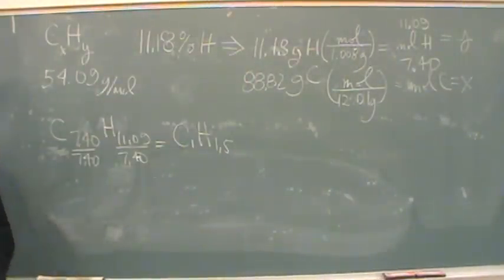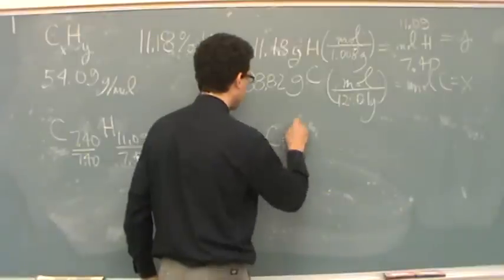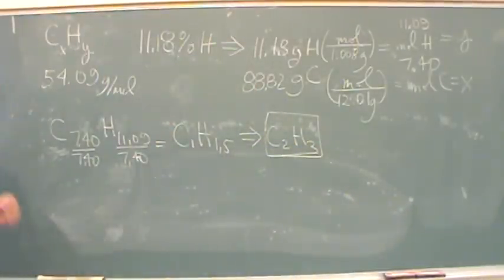Now hopefully you'll look at that and say, okay, according to multiple proportions, I can't have a fraction as a subscript. Multiply by 2. And that will transform this into C2H3. That's my answer for the empirical formula. Do you want me to do the other part, too? Okay. Thank you.